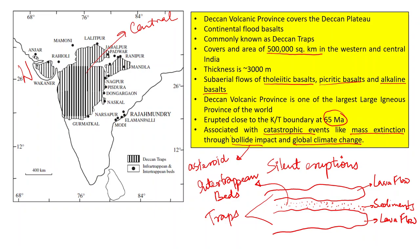On the map of India, the western portion — almost entire Maharashtra, some parts of Gujarat and Madhya Pradesh, and of course Goa and some parts of Karnataka — these are the major areas covered by the Deccan Volcanic Province.